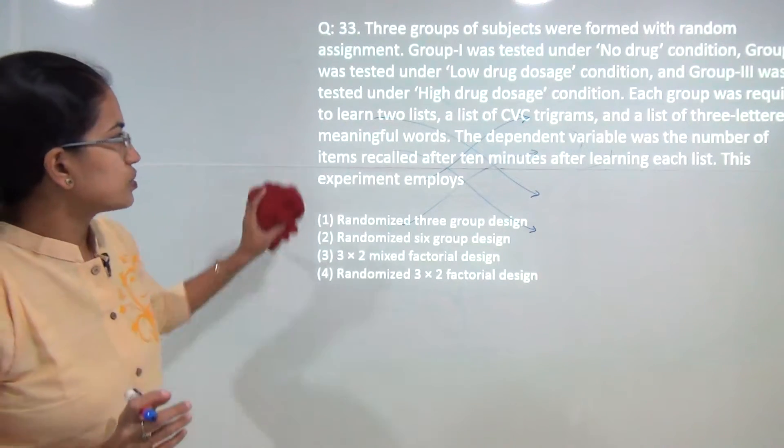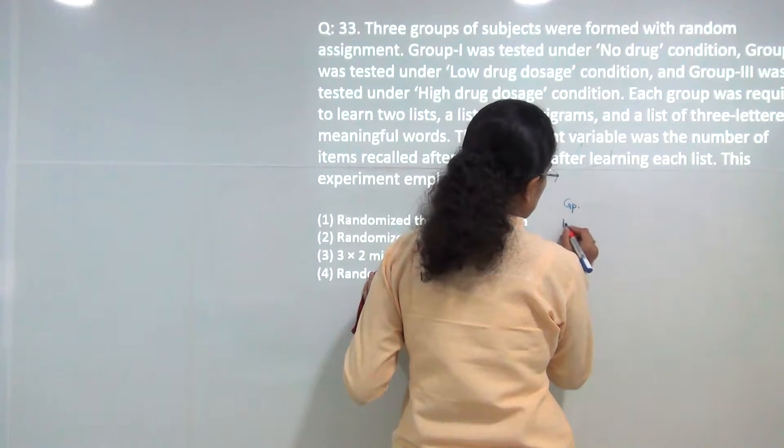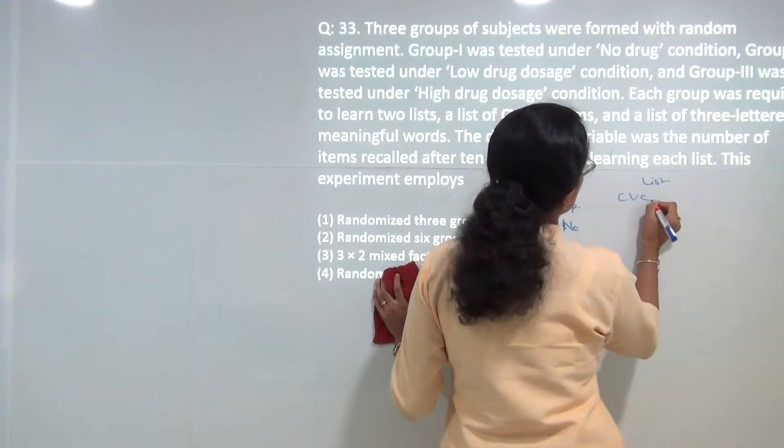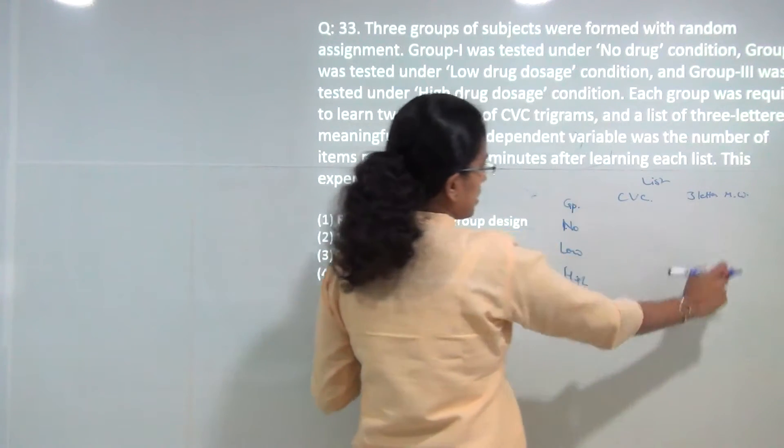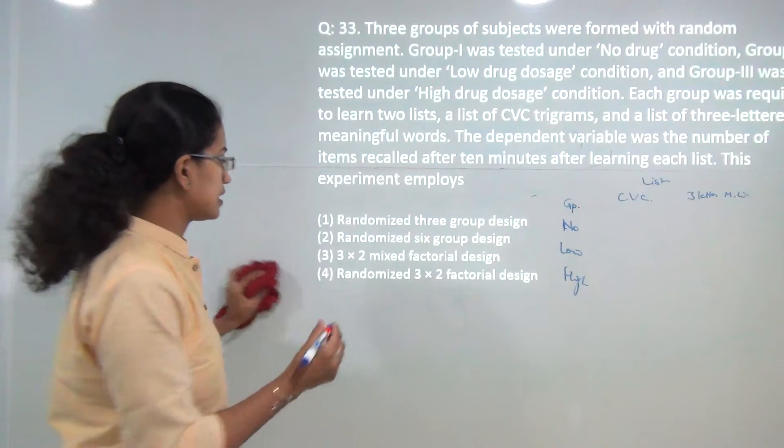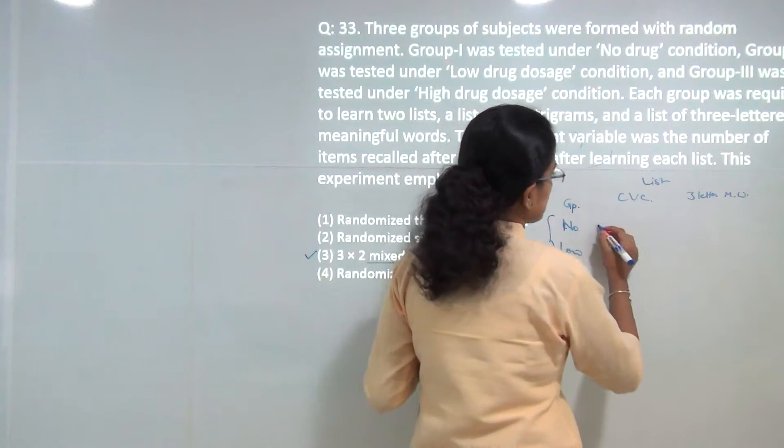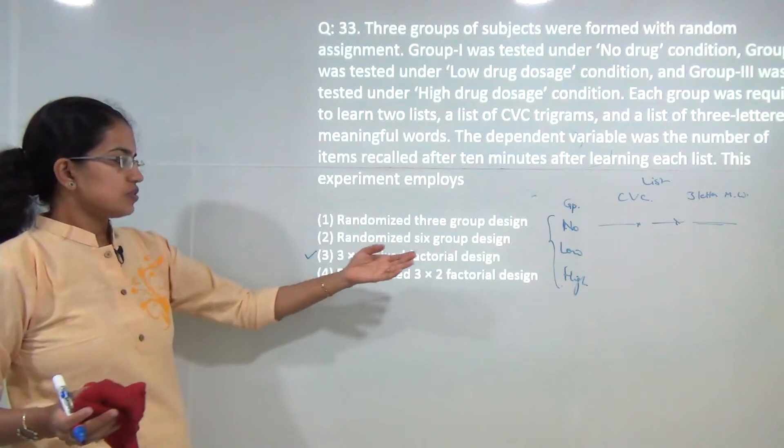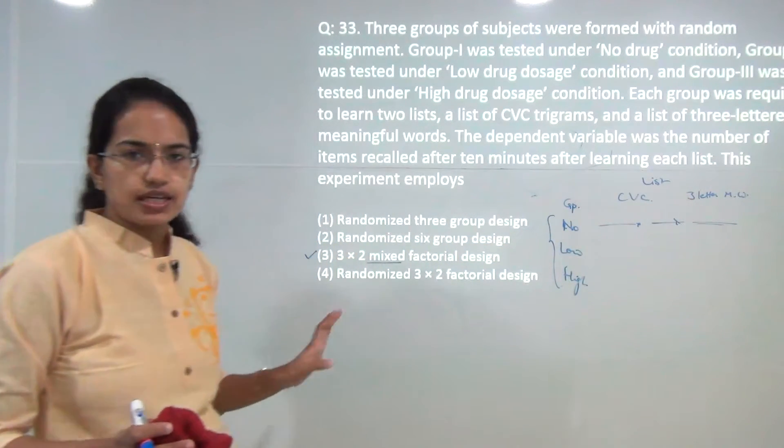Next question, you have three groups: no drug, low drug, and high drug. On the other hand you have list of words: CVC and three-letter meaningful word. This is a kind of three by two matrix, but the choices here would be either randomized or mixed. The correct answer here would be mixed, because you have between-group analysis and within-subject analysis. Therefore it would be a mixed factorial design. And since there are three parameters here and two here, it would be a three by two mixed factorial design.